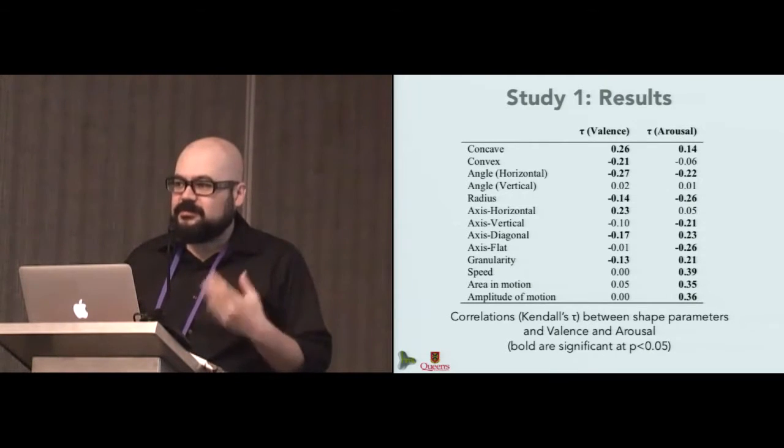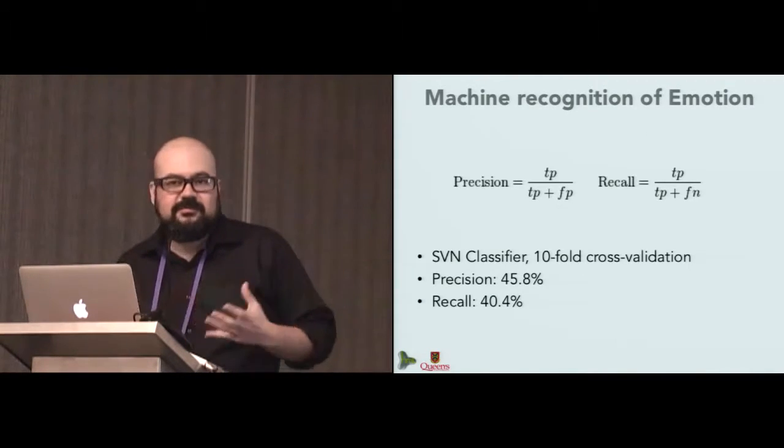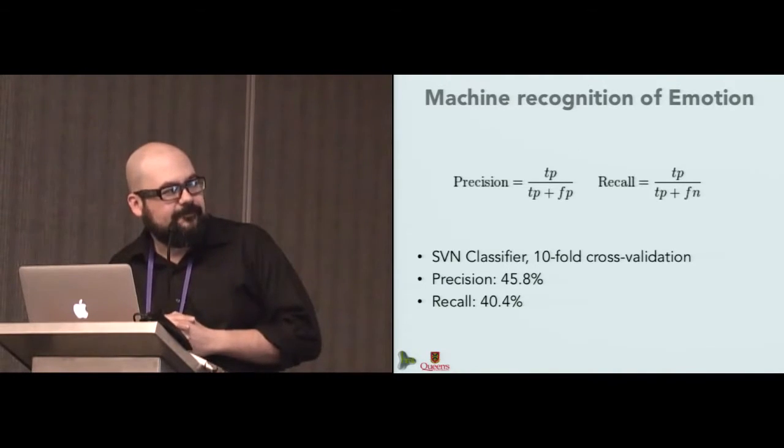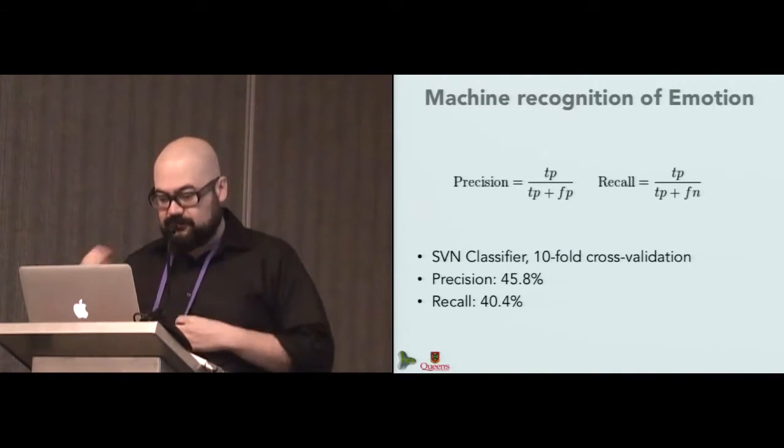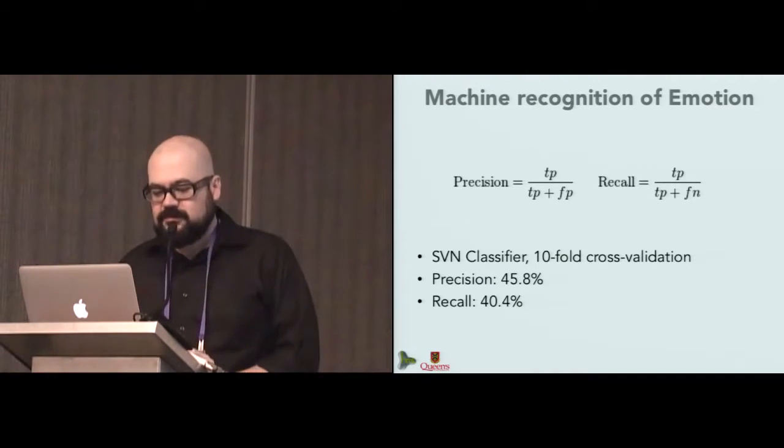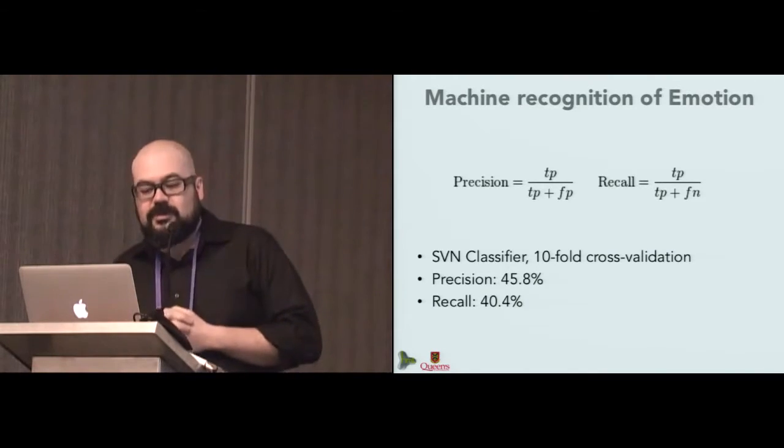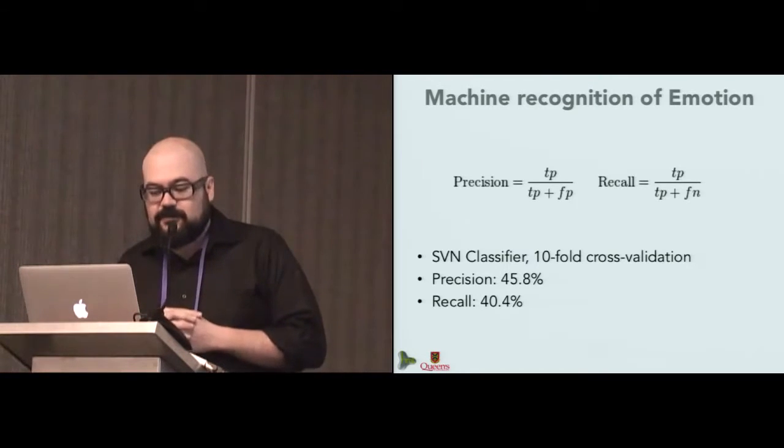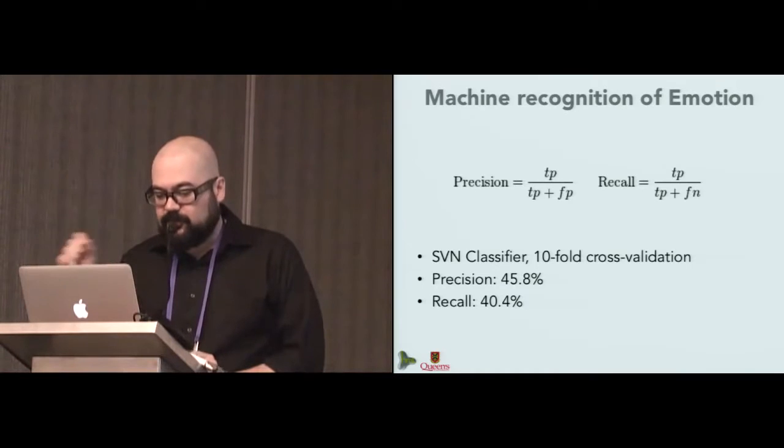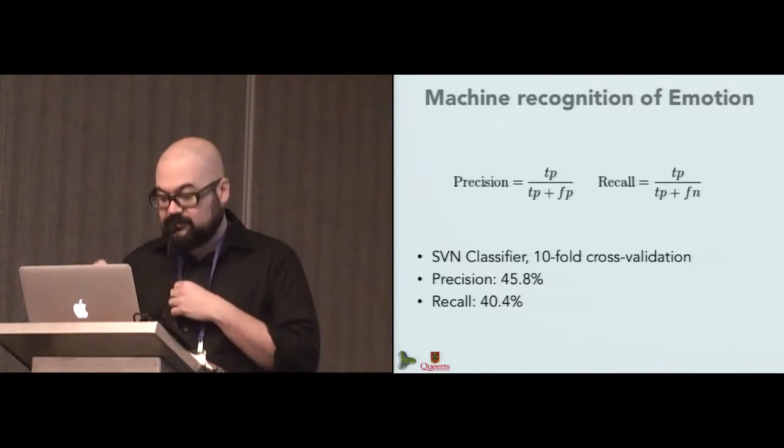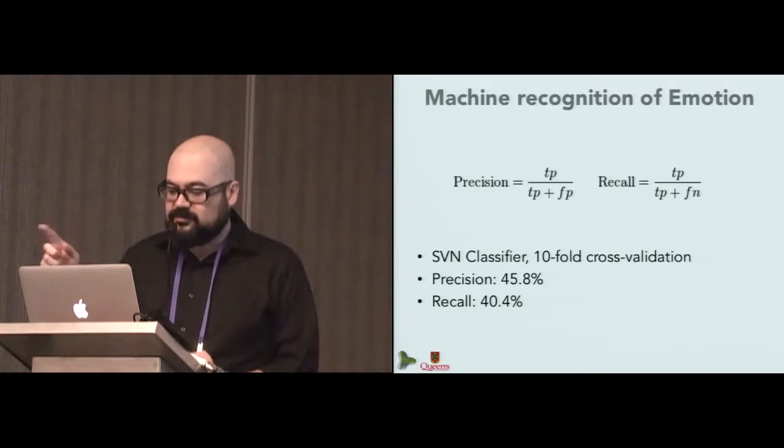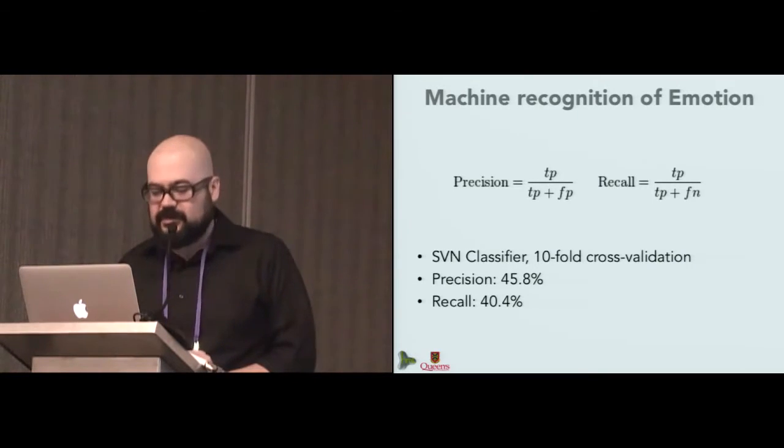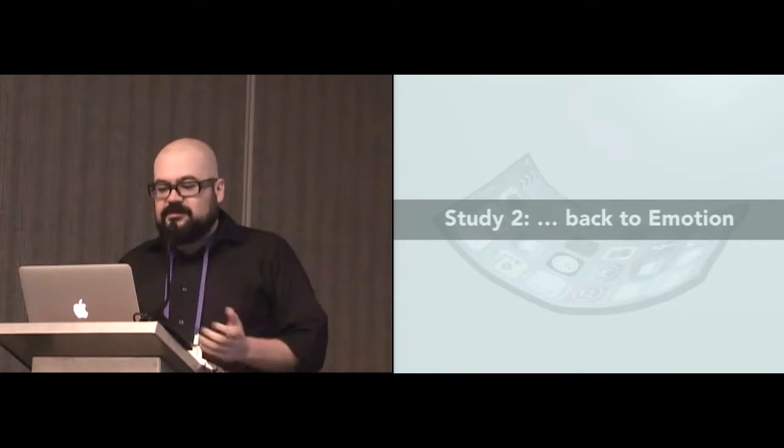So we wanted to test this a little bit. And just to prove our point, we ran an SVM classifier, a support vector machine classifier. We trained it with the 10-fold cross-validation. And after running this test, we found that it could classify the shapes, the emotion from the shapes, with a precision of 45.8% and a recall of 40.4%. Please remember that precision is a measure of the true positives over the true positives plus the false positives, while recall would be true positives over true positives plus false negatives.